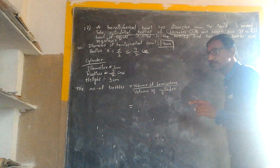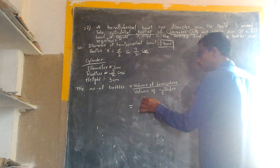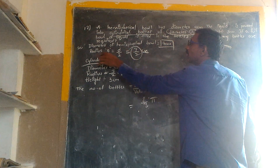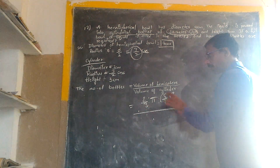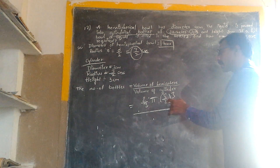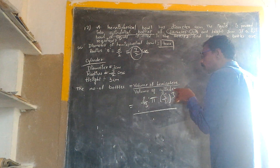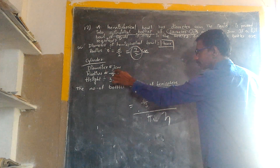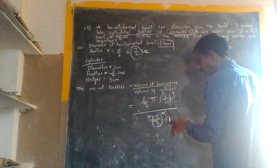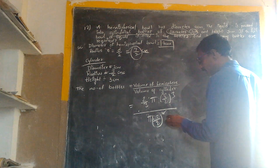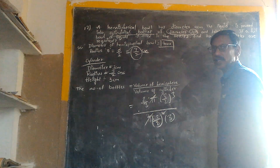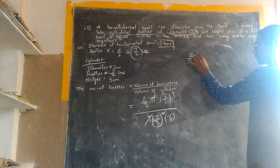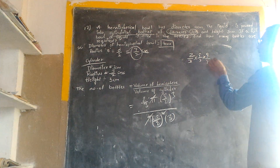The volume of the hemisphere is (2/3)πr³, where r is 9 by 2. So we compute (2/3)π(9/2)³ for the hemisphere, and the cylinder has radius 3 by 2 and height 3 cm.